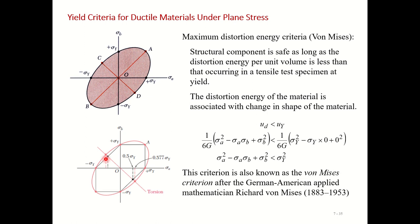If we superimpose the Tresca criteria on the Von Mises ellipse, the Tresca criterion forms a hexagon. There are points where both criteria give exactly the same result, but at other points a gap exists between the ellipse and the hexagon. This means the Tresca criteria is more conservative — it has a higher margin of safety.